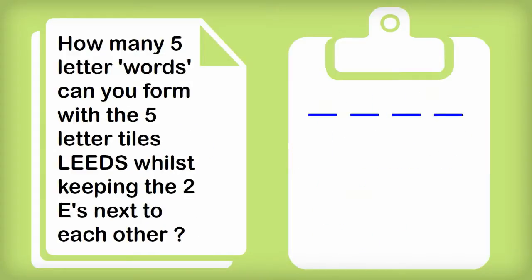For our final problem, let's go to England. How many five letter words can you form with the five letter tiles L, E, E, D, S, whilst keeping the two E's next to each other?